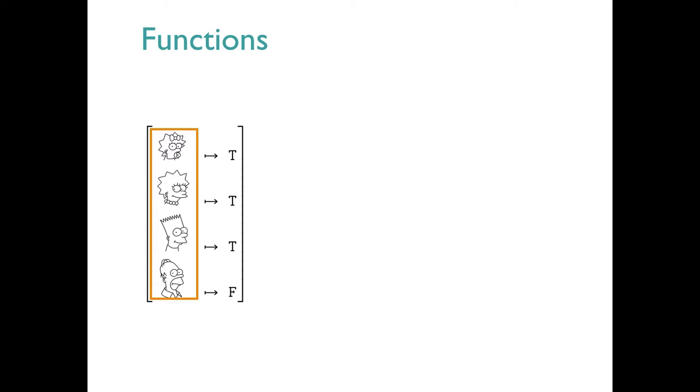To start, let's just establish some ways of talking about functions. This is a sort of bracket notation. The inputs are on the left, the outputs are on the right, and the arrows show how the inputs and outputs are connected. Intuitively, for this domain, this could be called the child function, since the three children map to true, and the one adult maps to false.